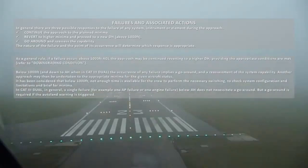As a general rule, if a failure occurs above 1000 feet AGL the approach may be continued, reverting to a higher Decision Height, providing the appropriate conditions are met. This applies from downgrading conditions below 1000 feet down to alert height when in CAT 3 dual.